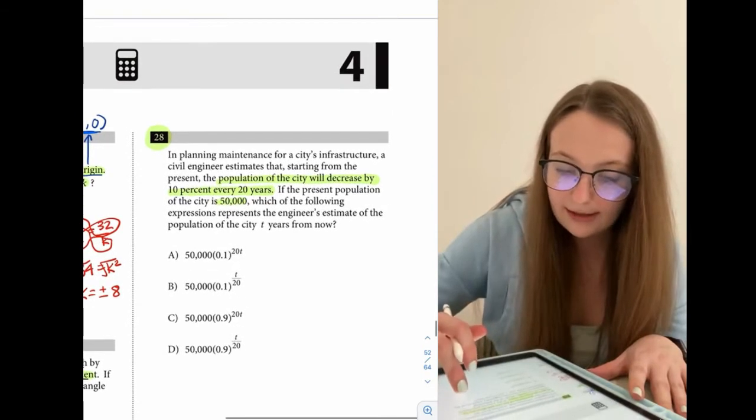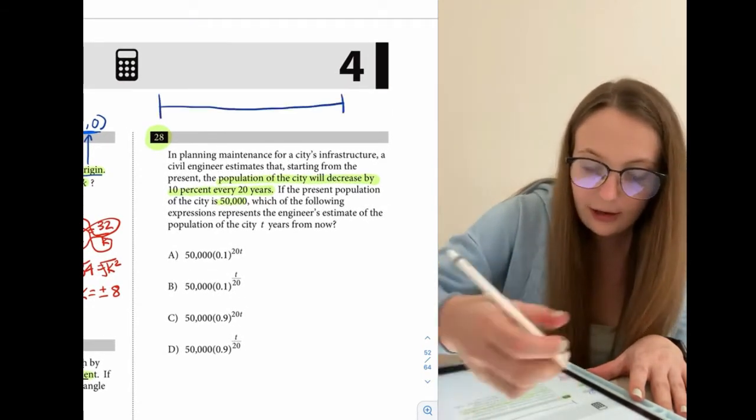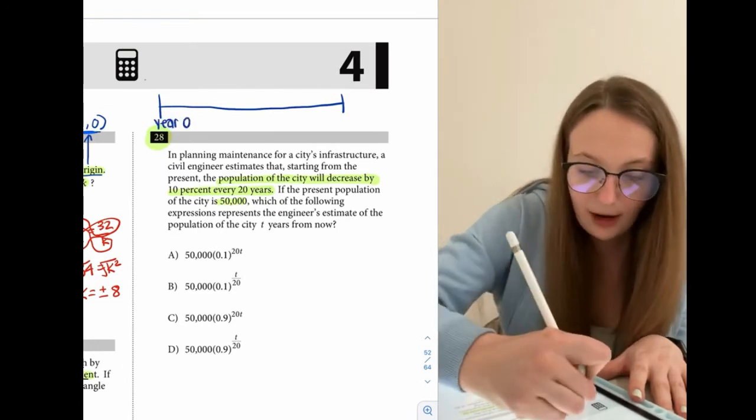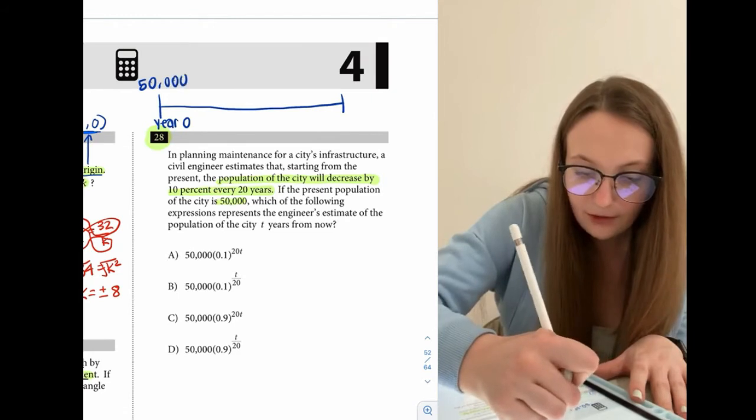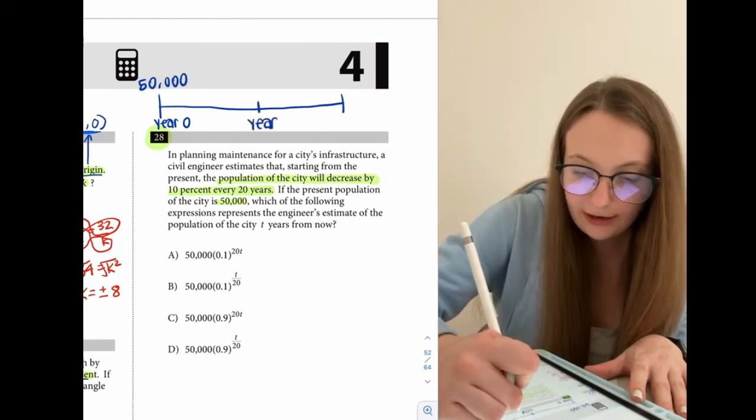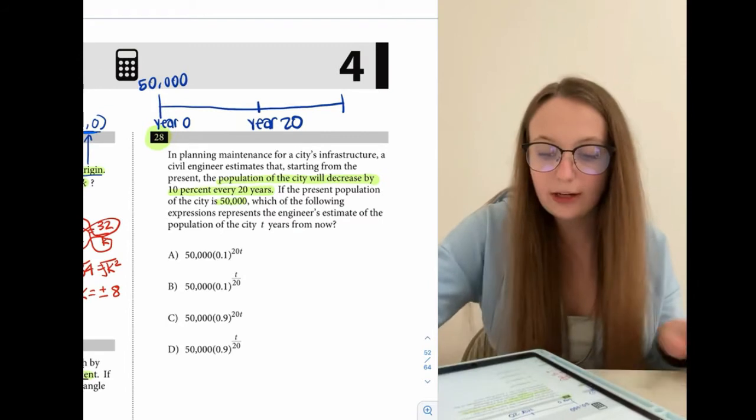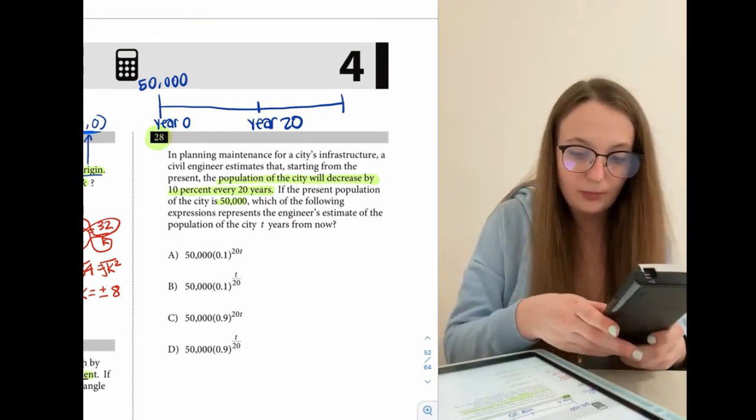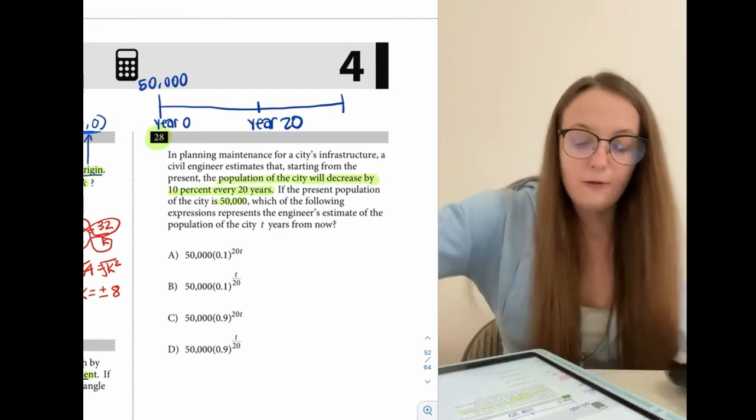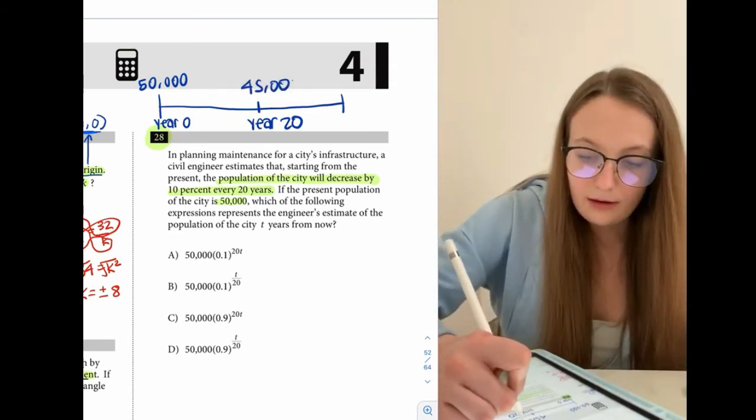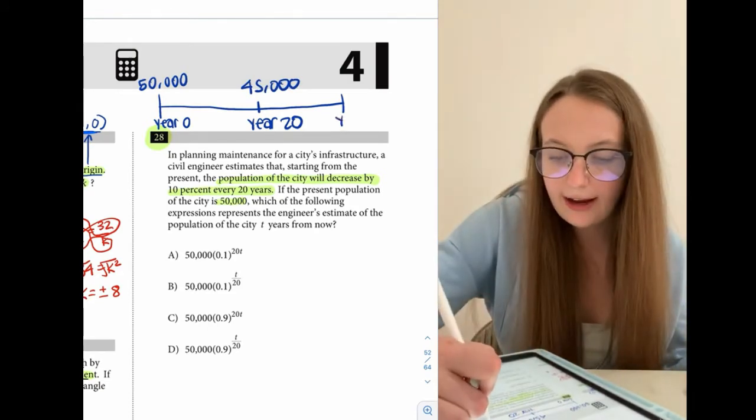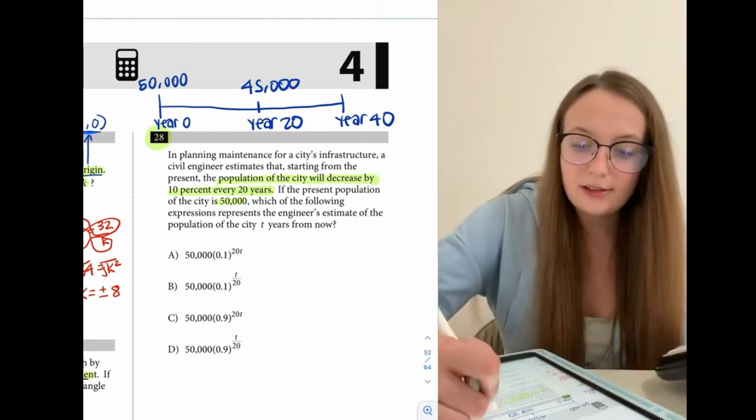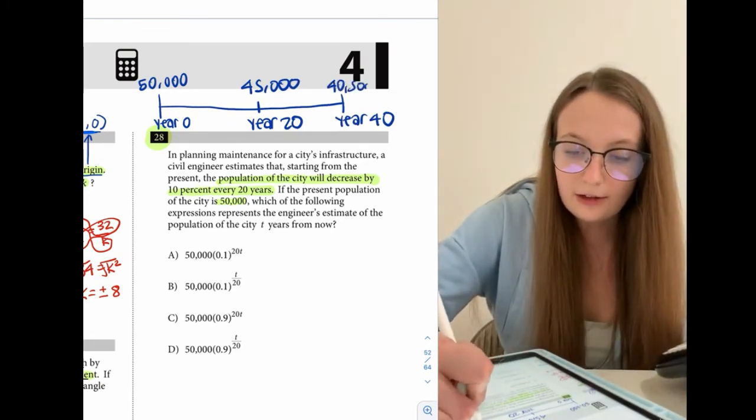So what that means then I want to draw a little timeline here. What that means then is that right now, year zero, no years have passed. The population is 50,000. After 20 years, the population is going to decrease by 10%, meaning that the population is going to be 45,000. And then same thing would apply in year 40. It will again decrease by another 10%. So that would give us 40,500.